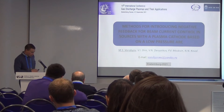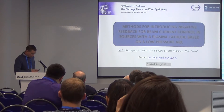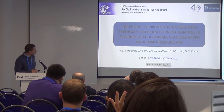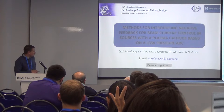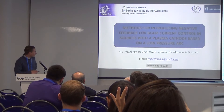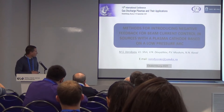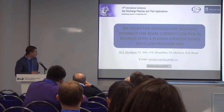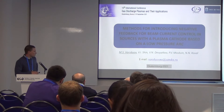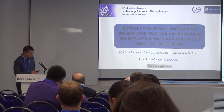I'd like to tell you about the methods for introducing negative feedback for beam current control in sources with a plasma cathode based on a low-pressure arc discharge.